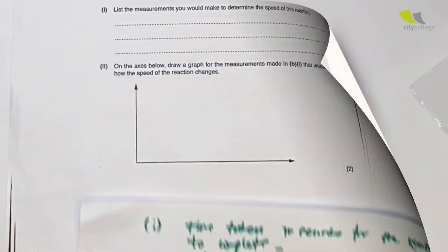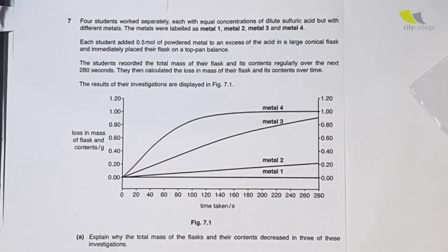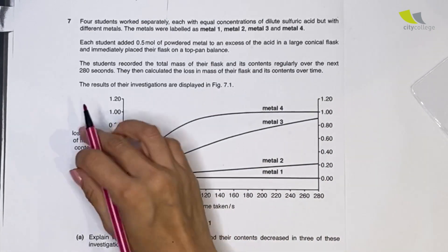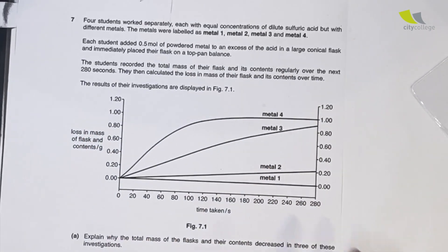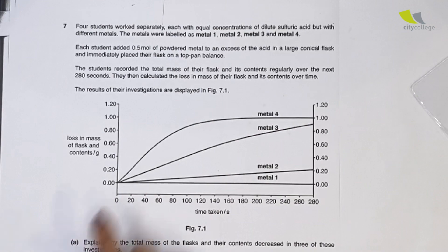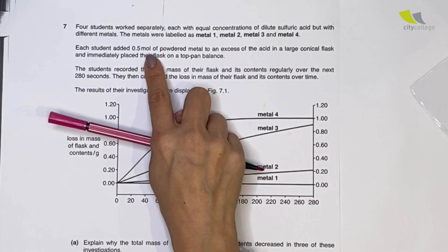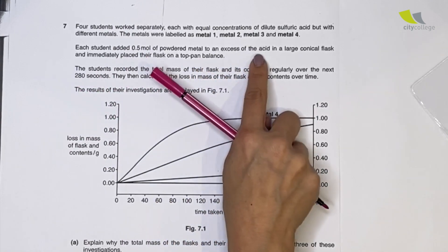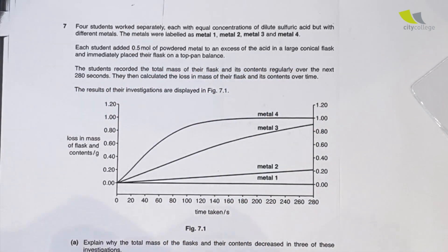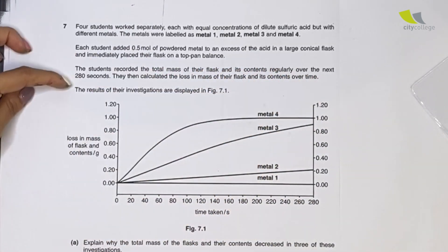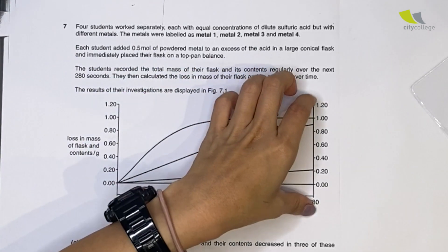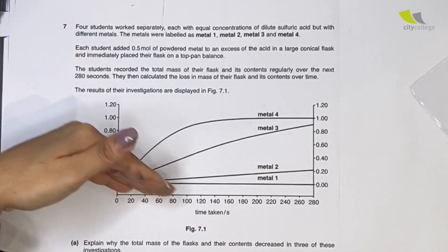Next up is a little bit different. For this graph over here, you're given all the graphs and this is the loss in mass. They say that four students working on four metals - 0.5 moles of the powdered metal in an excess of acid in a large conical flask, and it's measured in 280 seconds. They ask you to interpret this graph.